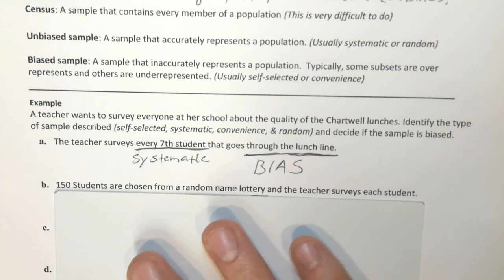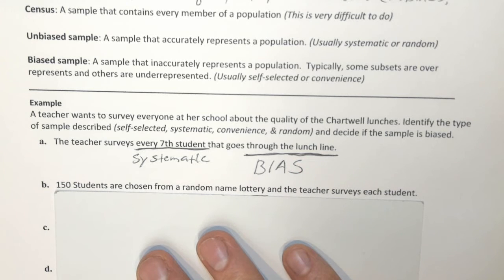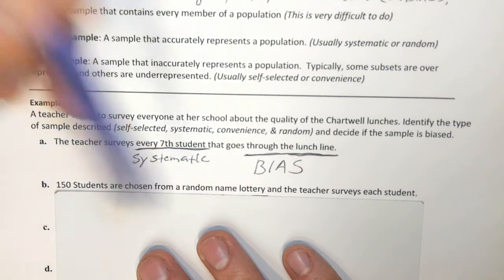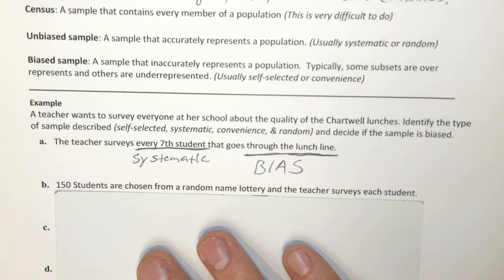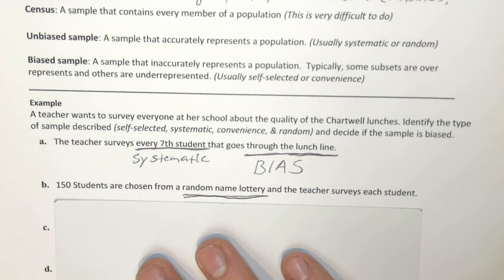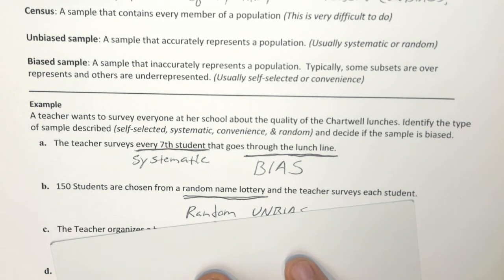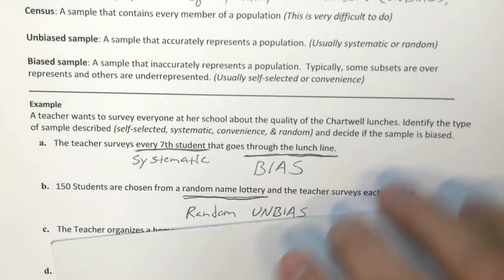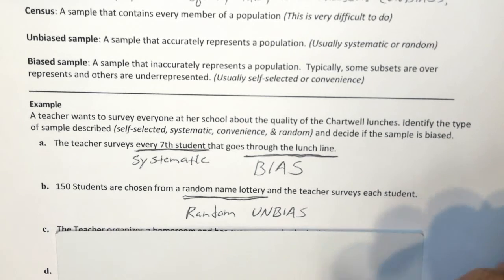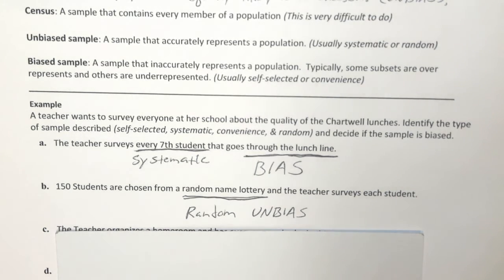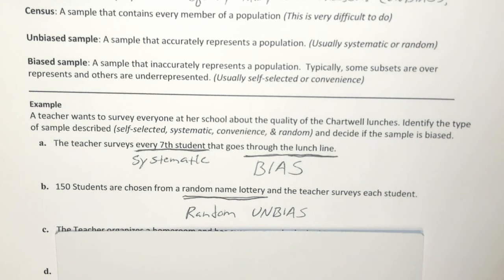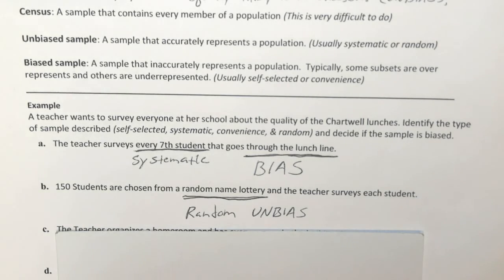In example B, 150 students are chosen from a random name lottery and the teacher surveys each student. This is definitely a random sample, and random samples are the best because they are very unbiased. She could pick people that like the cafeteria lunches or don't like them, or just think they're okay — she can get everybody's opinion in this situation.